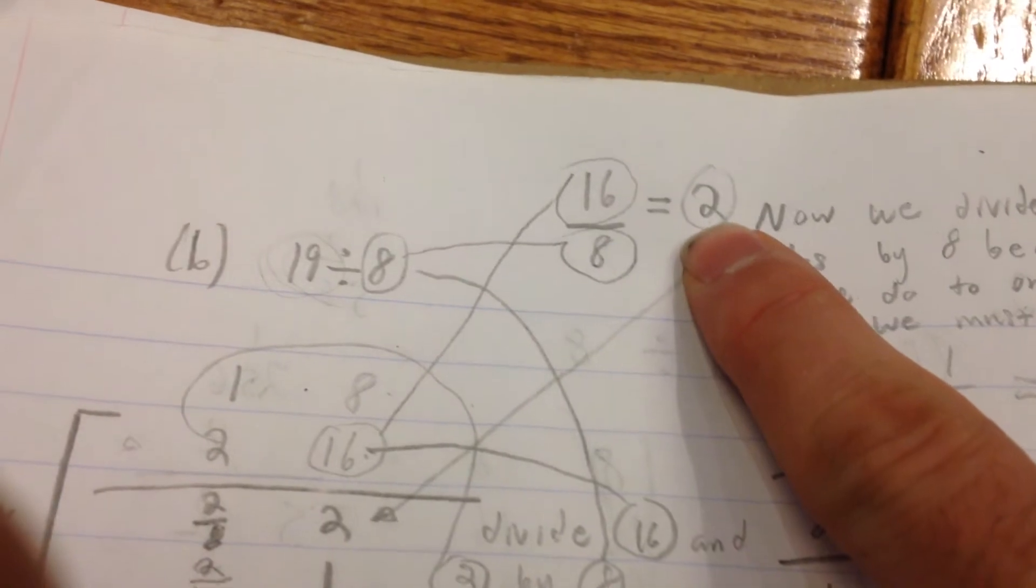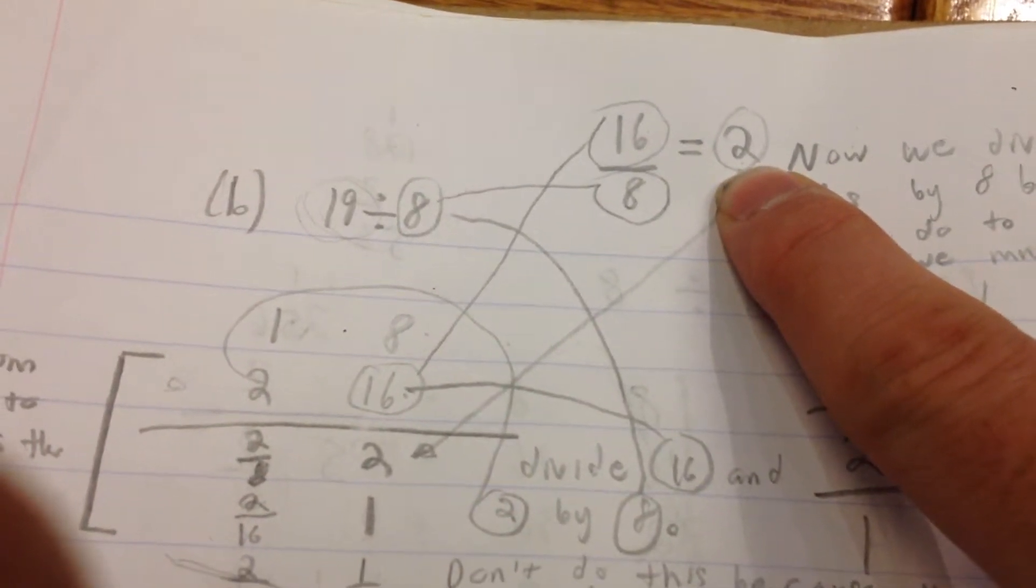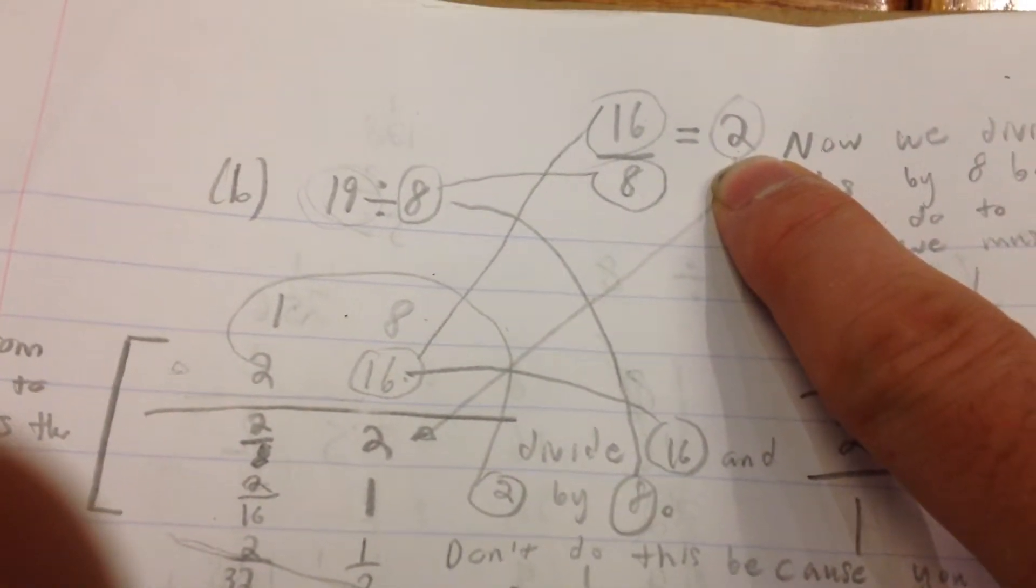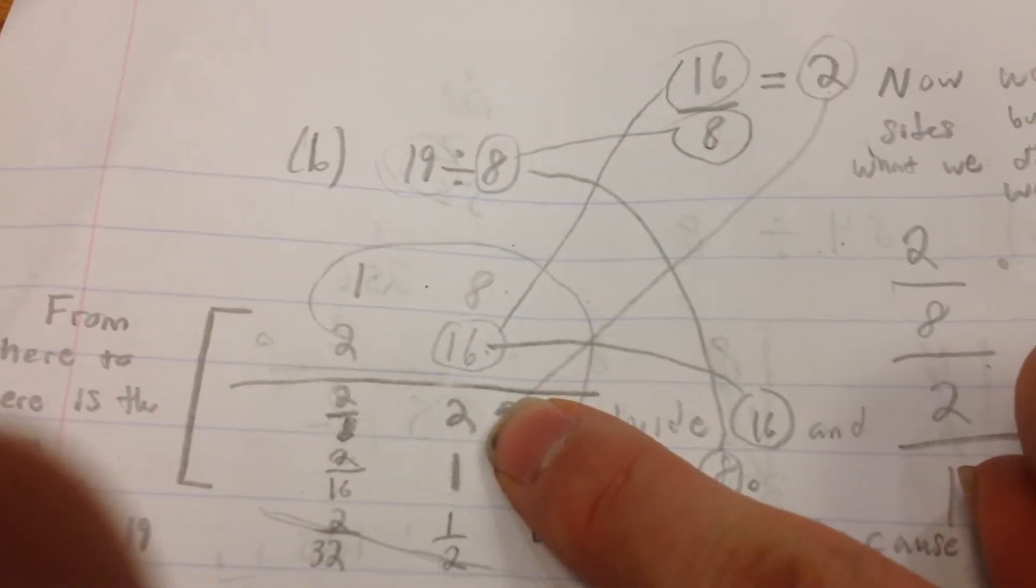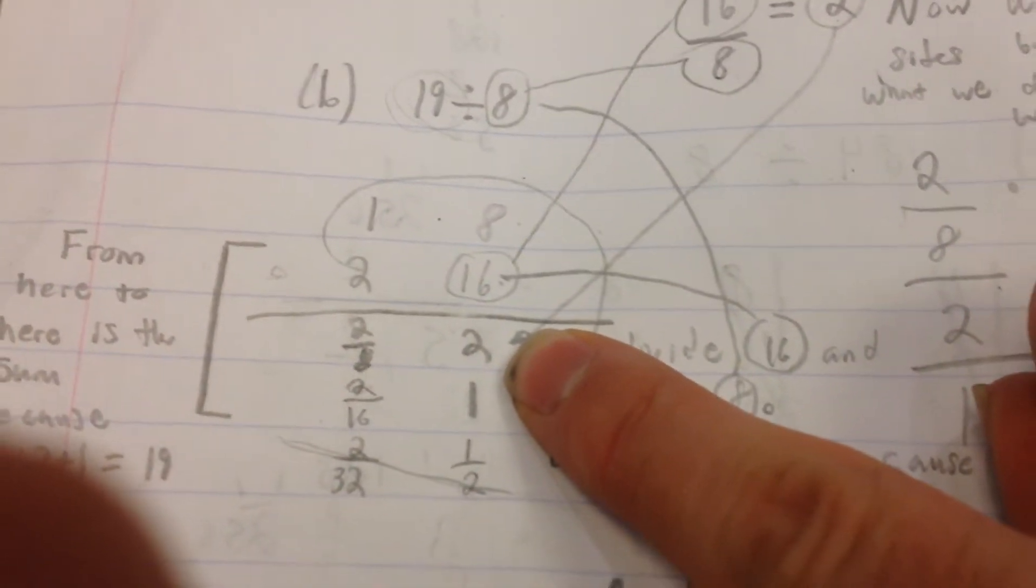When you have that equal to 2, you then divide both sides by 8 because that's what we do. The 2 goes down here now, and this is just to set up the fractions.